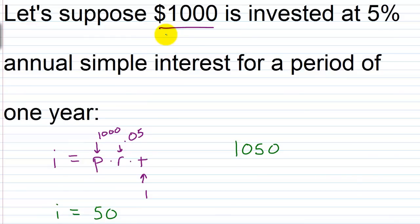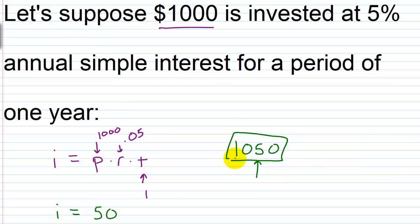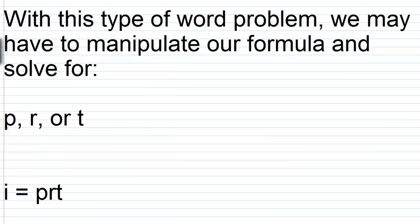Going back to the difference between simple and compound interest: after one year you've got a new account balance of one thousand fifty dollars. With simple interest, the next year you're going to get the exact same fifty dollars in interest every year, no matter what your account balance goes to. With compound interest you're now going to receive five percent on the new balance — that's the key difference. With compound interest you're able to earn interest on the interest you've already made.